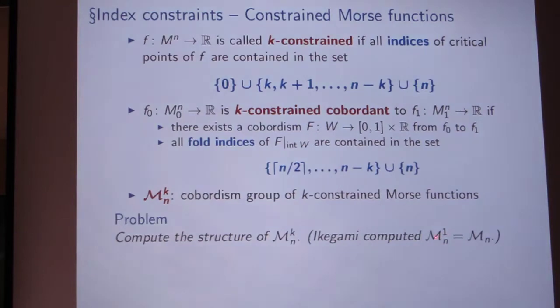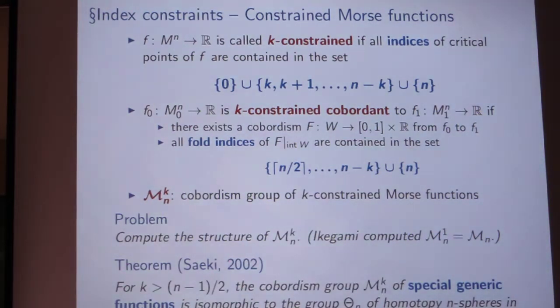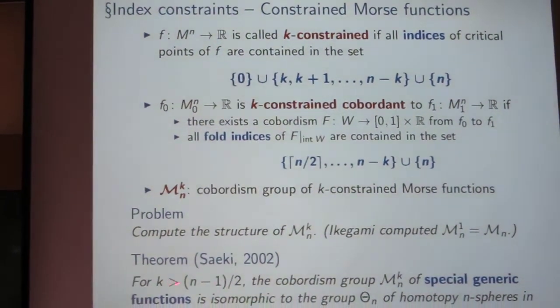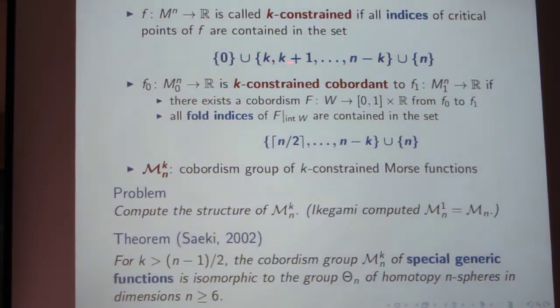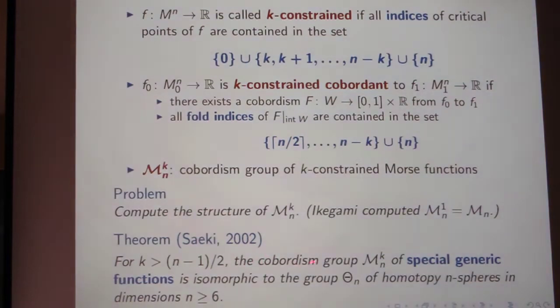So if you use this kind of definition then you get again a cobordism group, this time of k-constrained Morse functions. First of all the problem arises to compute the structure of this. The case we considered before was the case that k is one. This has been understood by Ikegami, that's what I talked about in the beginning. But the case of higher k might be interesting. In fact there is another theorem due to Saeki from the beginning of the 2000s, and he showed that when k is big enough, I mean this just means that you forbid all the indefinite indices here, if k is big enough then the resulting cobordism group M_{n,k}, which is now called the cobordism group of special generic functions because Morse functions without any indefinite critical points are called special generic functions, this cobordism group turns out to be isomorphic to the group of homotopy spheres, at least when the dimension is at least six. So in that way you can detect exotic spheres.